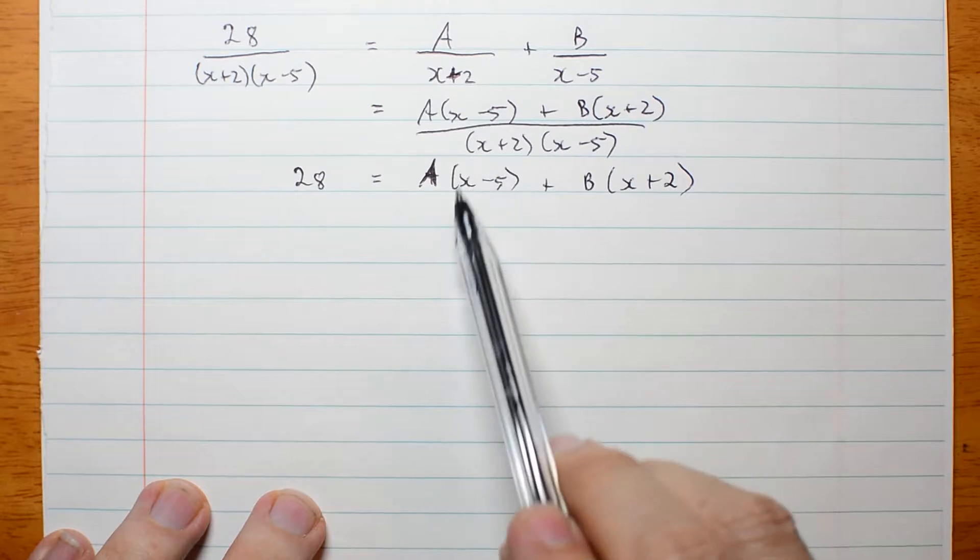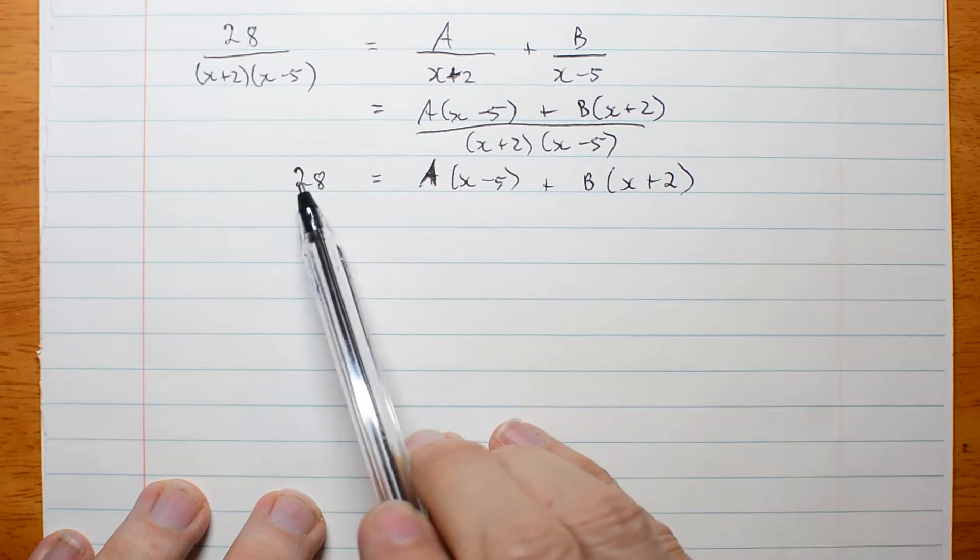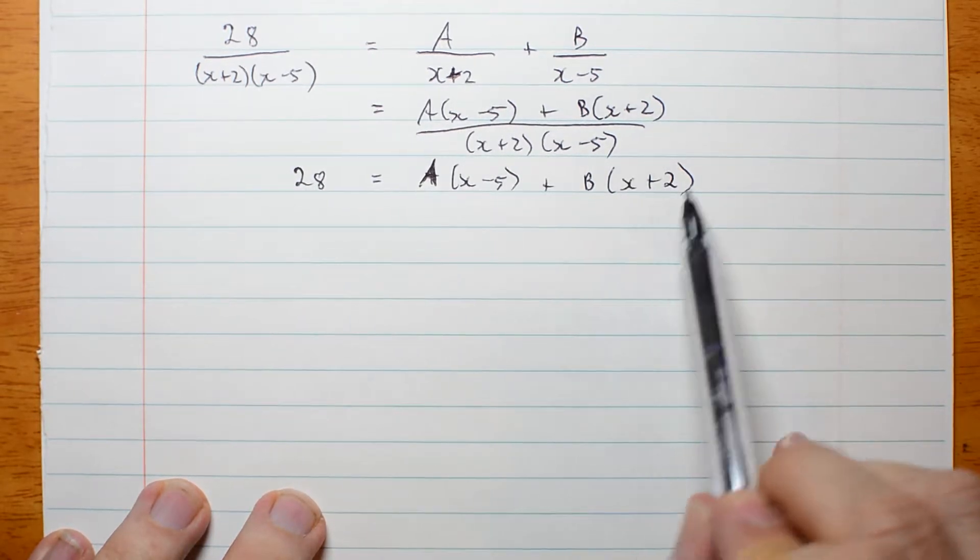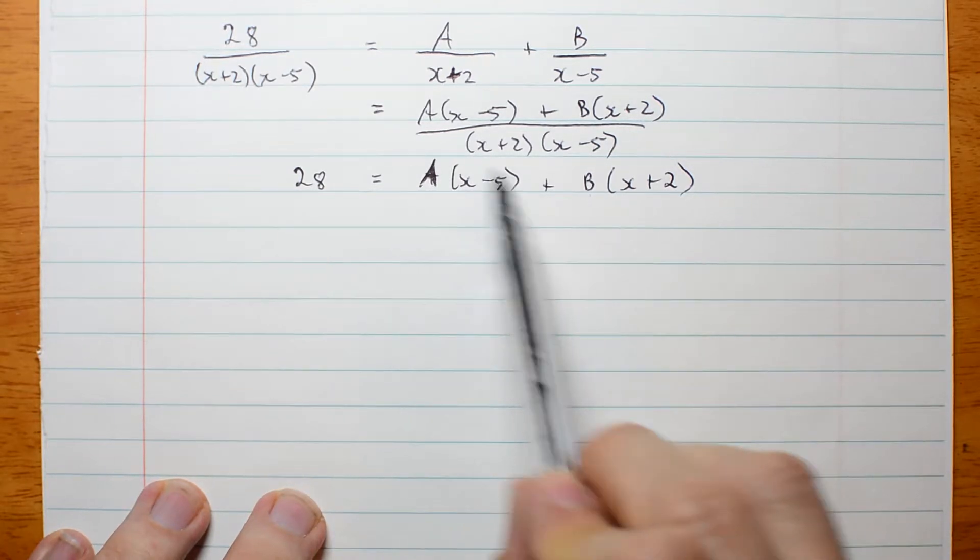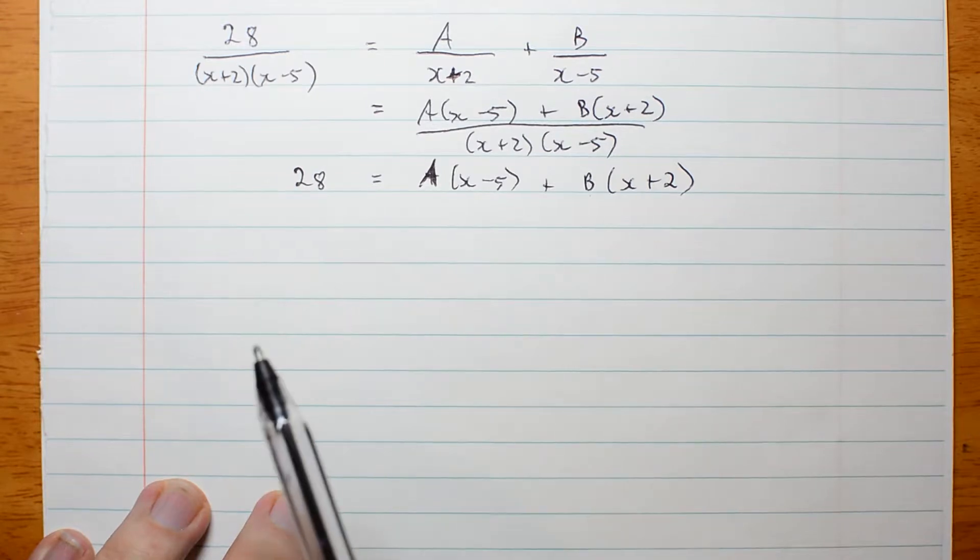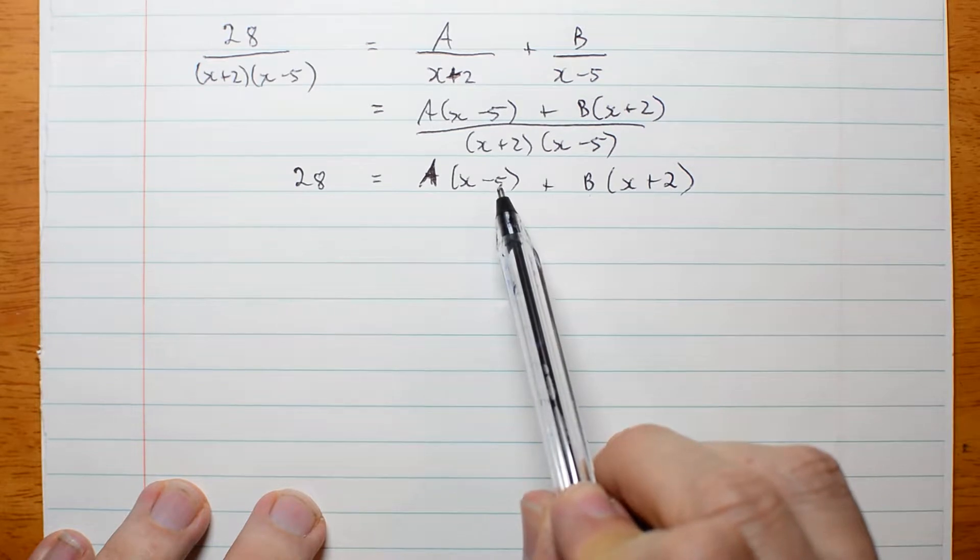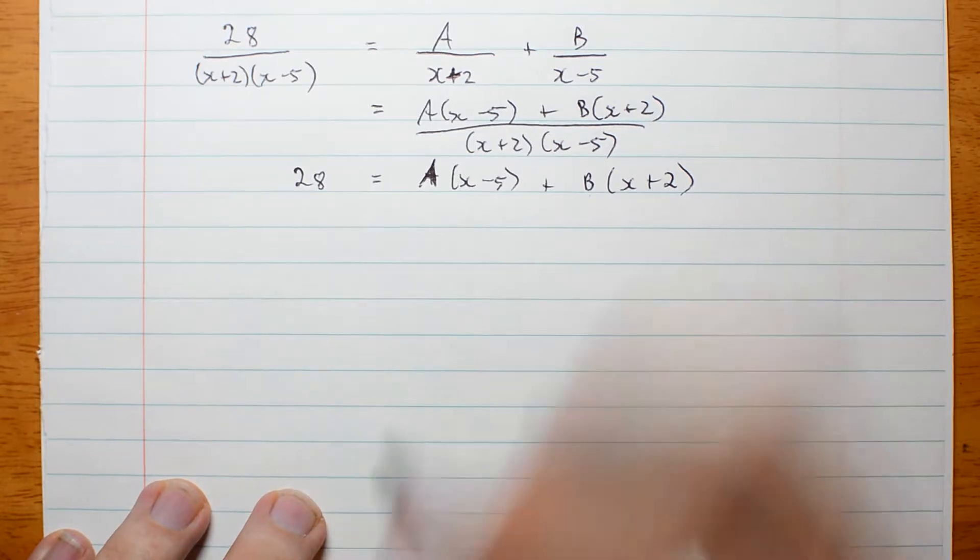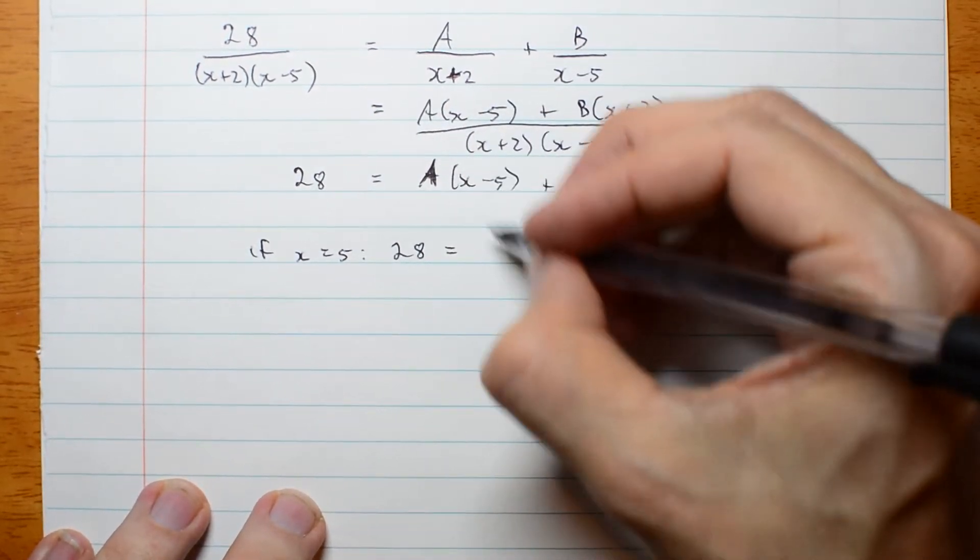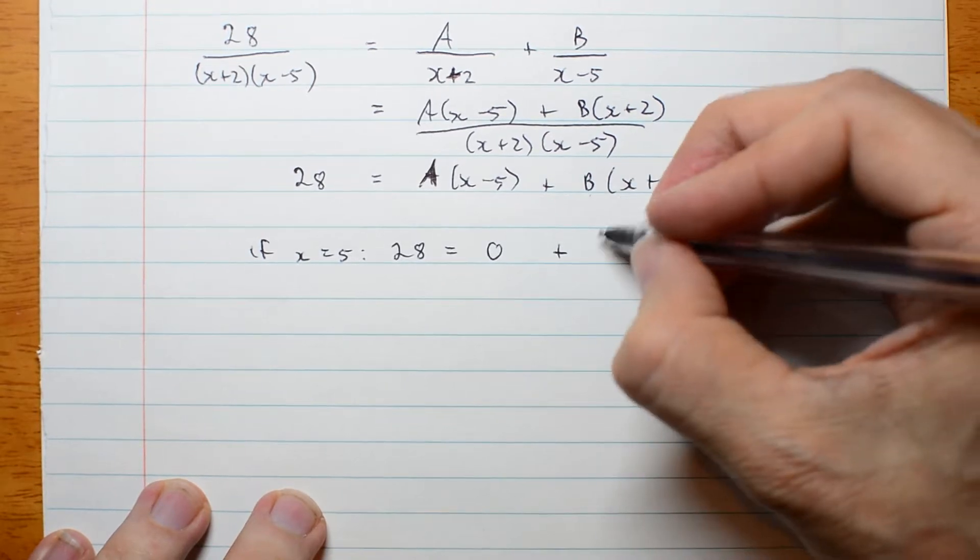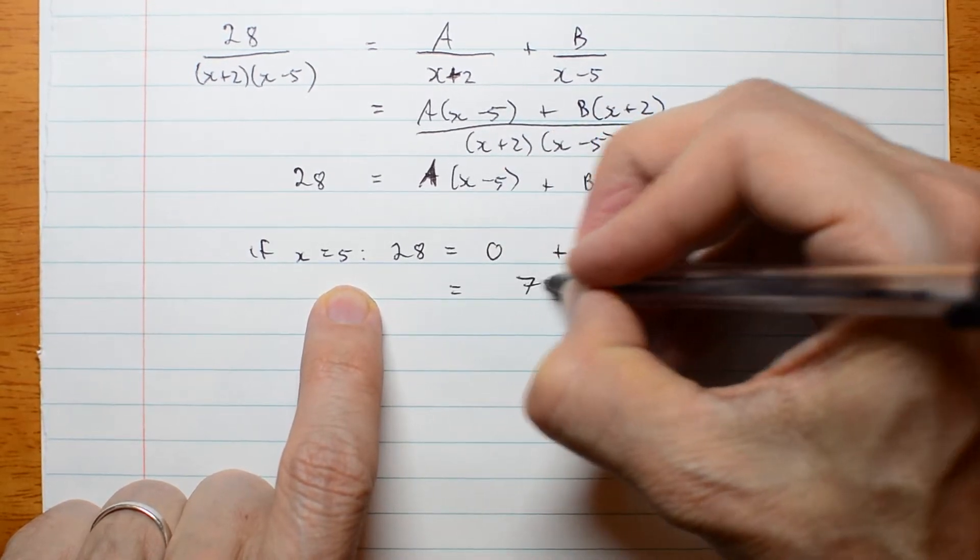If I can make this equal to 0, then a doesn't matter, and this has to equal this. How do I do that? How do I make this be 0? Well, that's easy. x has to equal 5. So if x equals 5, then 28 must be 0 plus b times 5 plus 2, which is 7b.